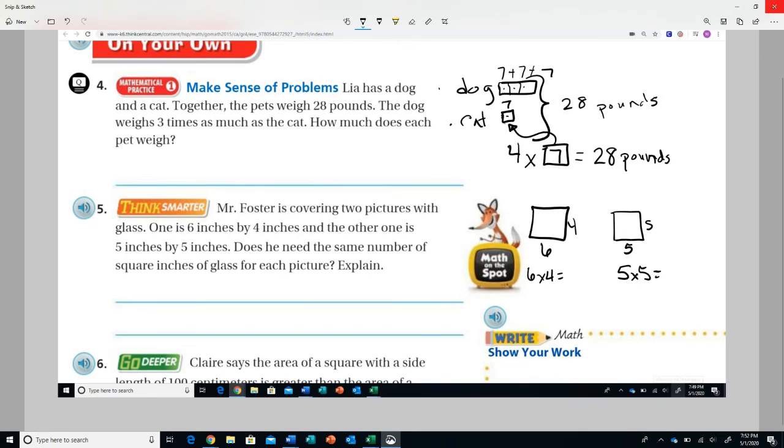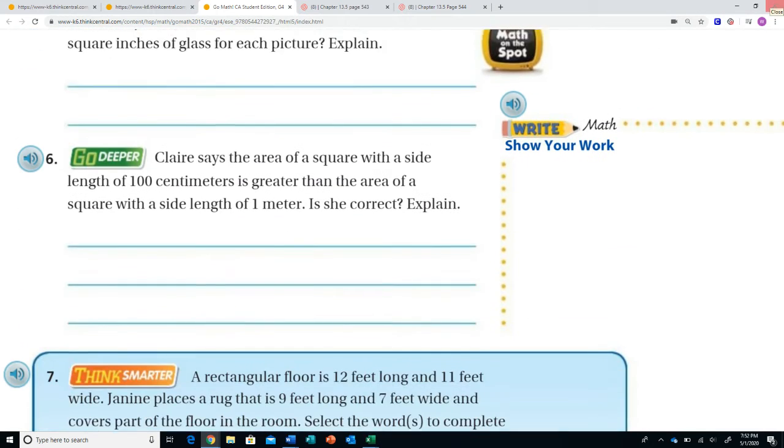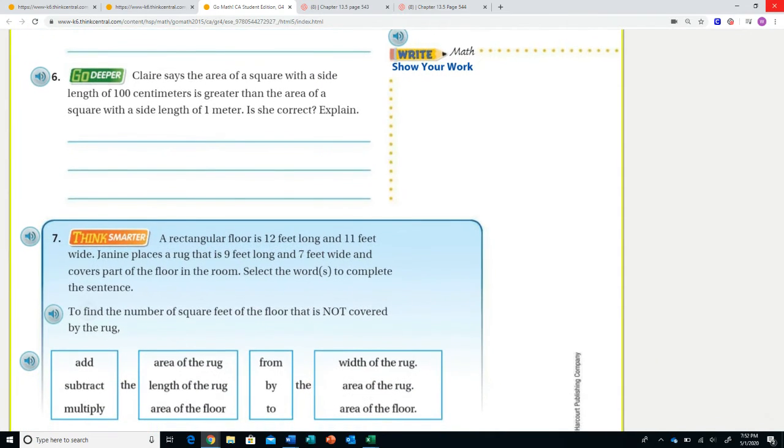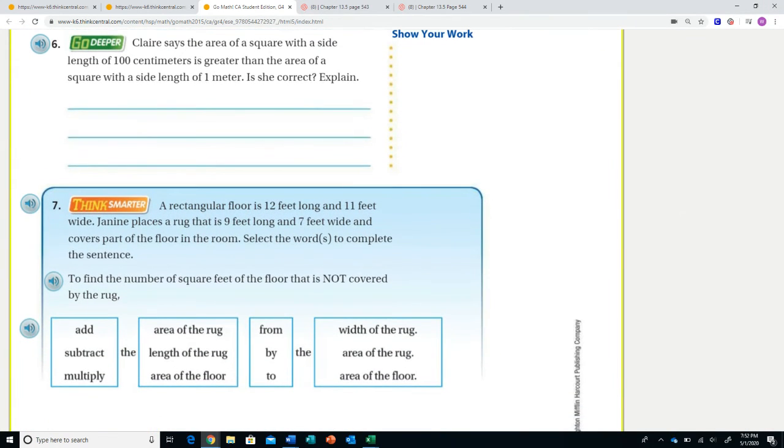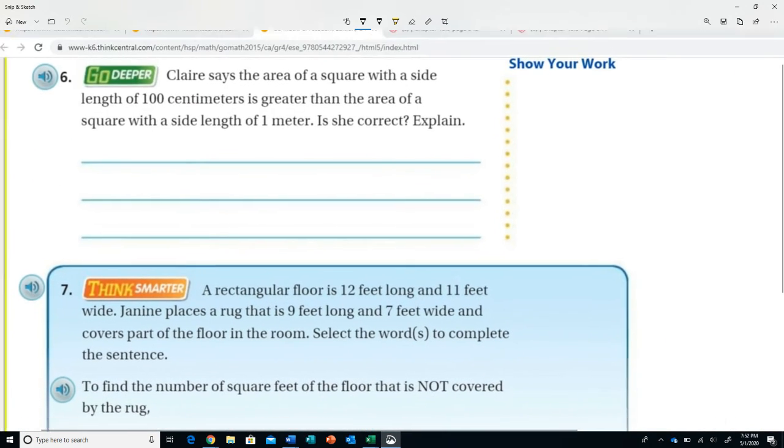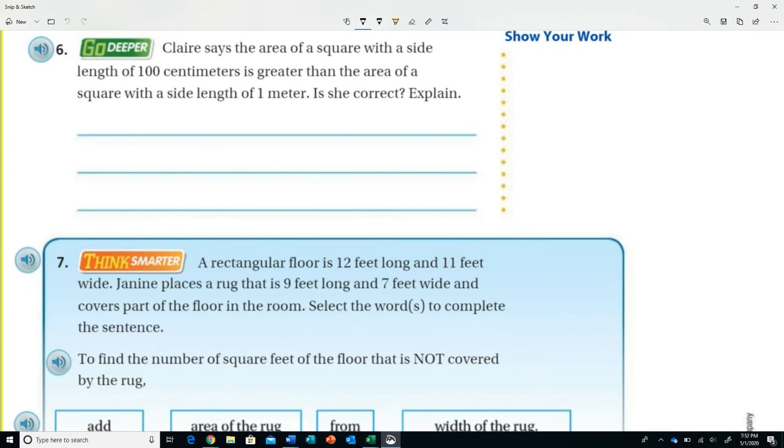Let's take a look at question six. Claire says the area of a square with a side length of 100 centimeters is greater than the area of a square with a side length of one meter. Is she correct? Explain. I'm going to give you one bit of information here that should make this problem much simpler. 100 centimeters is equal to 1 meter.